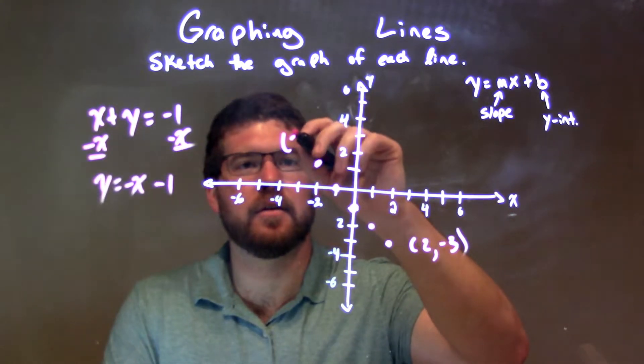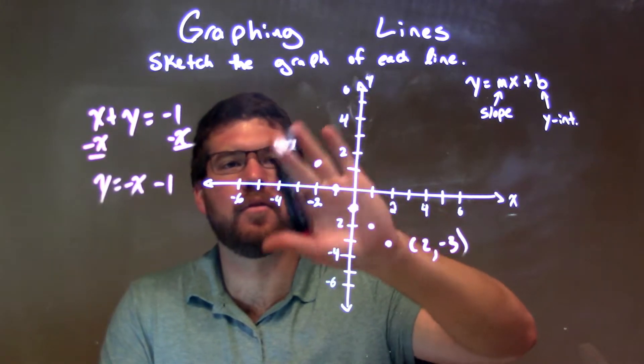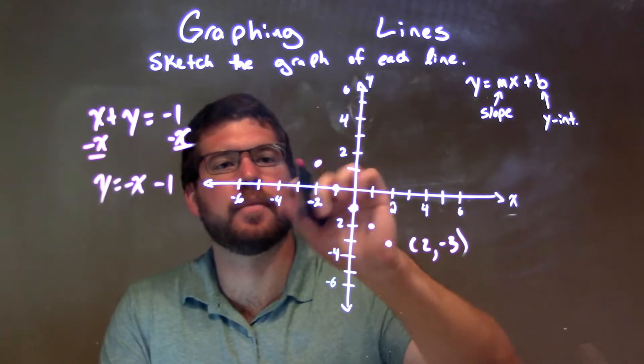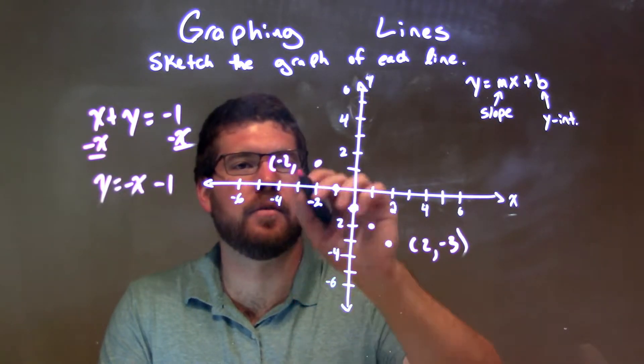Let's put this on the path of the line. That point right there is negative 2 comma positive 1.